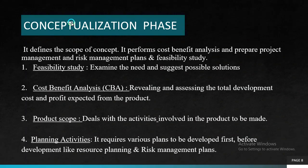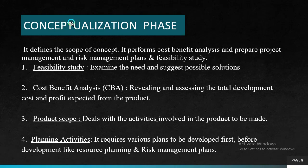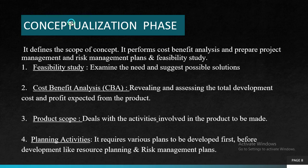The next phase is the conceptualization phase. This phase defines the scope of concept, performs cost-benefit analysis, and prepares project management and risk management plans and feasibility study. Feasibility study means examining the need and suggesting possible solutions. Cost-benefit analysis, also known as CBA, involves revealing and assessing the total development cost and profit expected from the product. Product scope deals with the activities involved in the product to be made, and planning activities require various plans like resource planning and risk management plans.